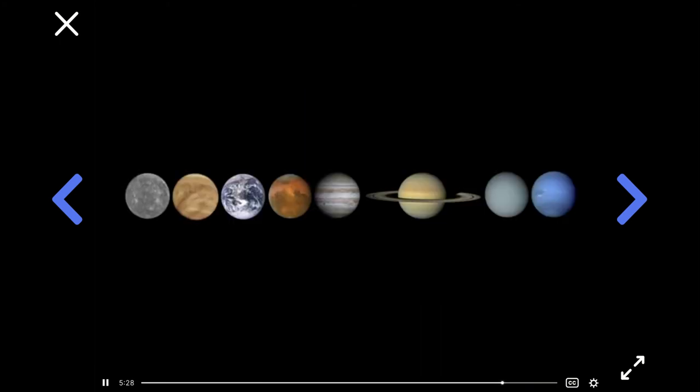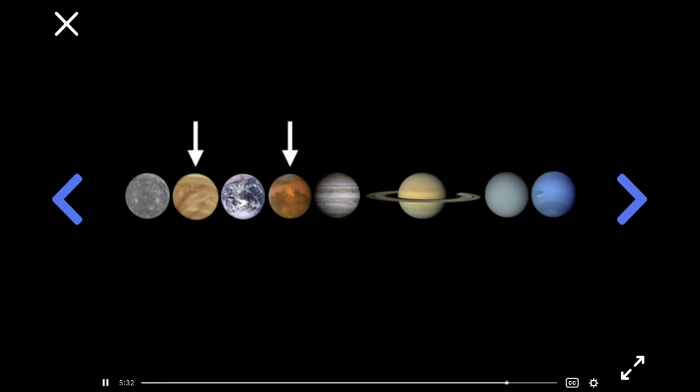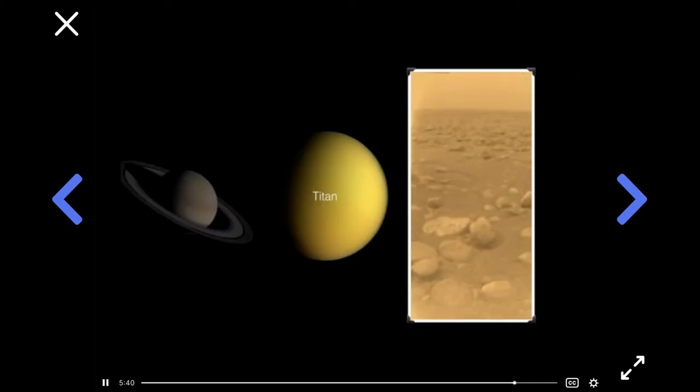So we've flown robotic cameras past all the planets and put landers on two of them, Mars and Venus, which are the planets scientists now know the most about. We've even remote control landed something on one of Saturn's moons, 10 times farther away from the Sun than we are, the farthest away we've ever landed something on.